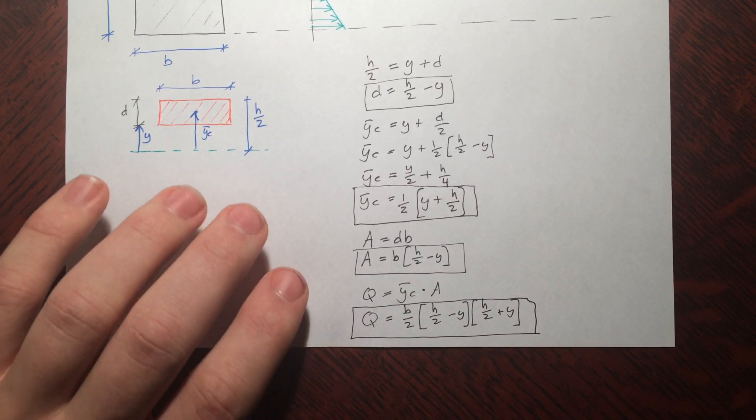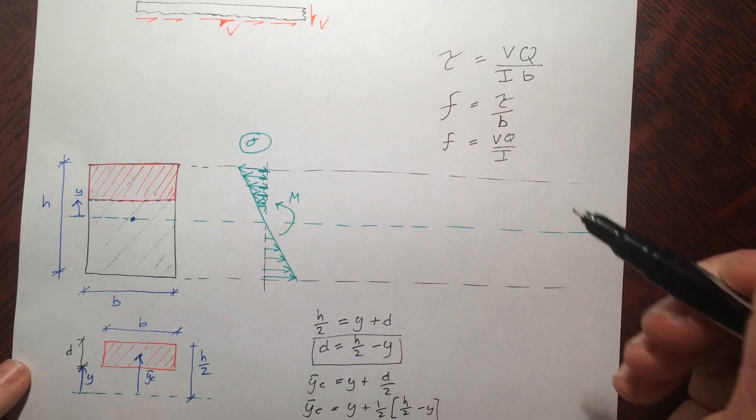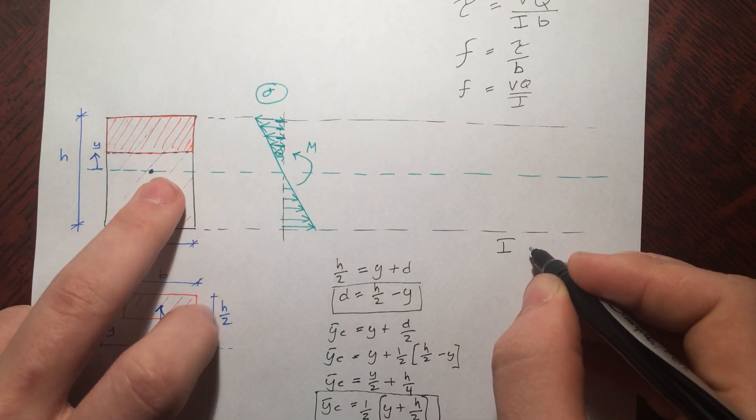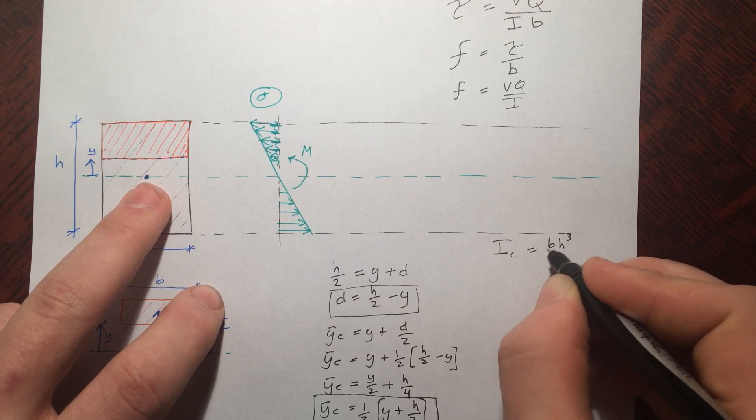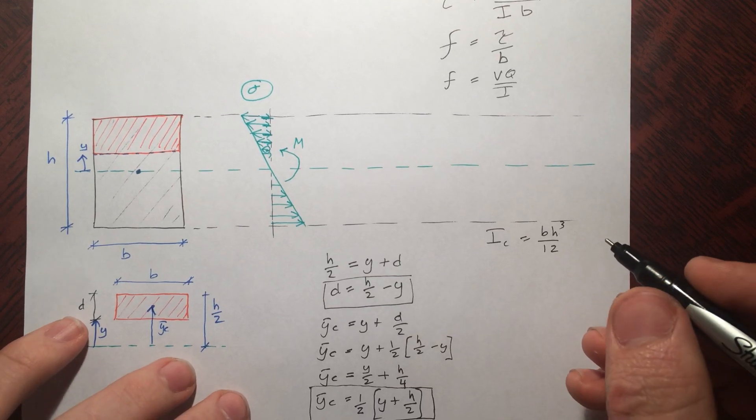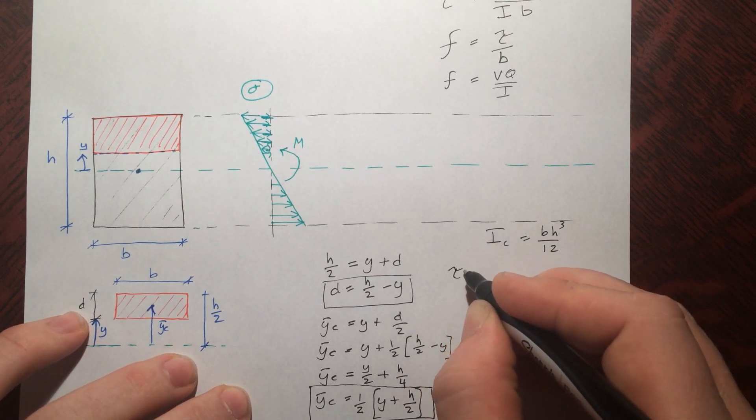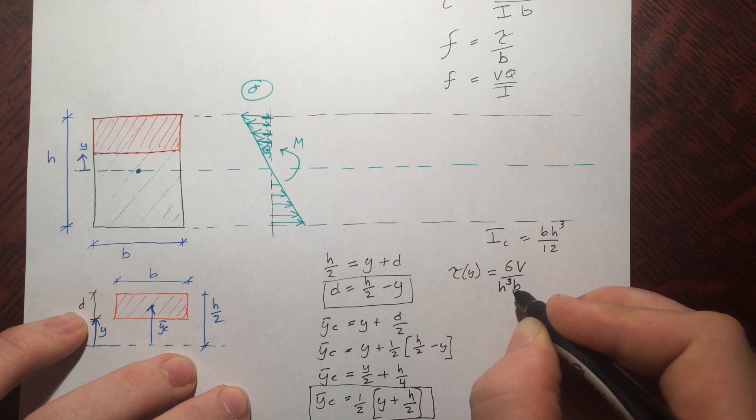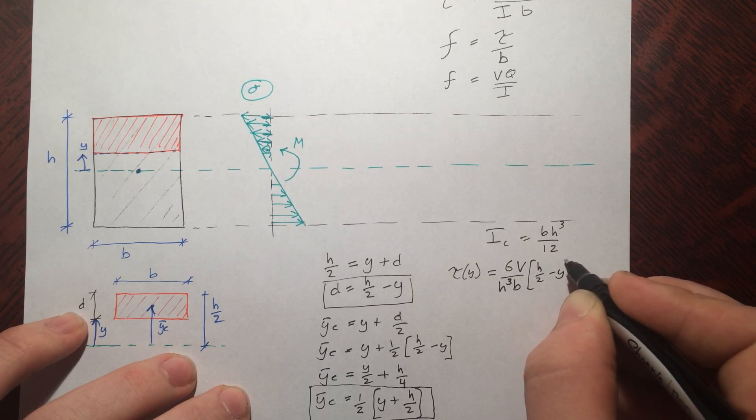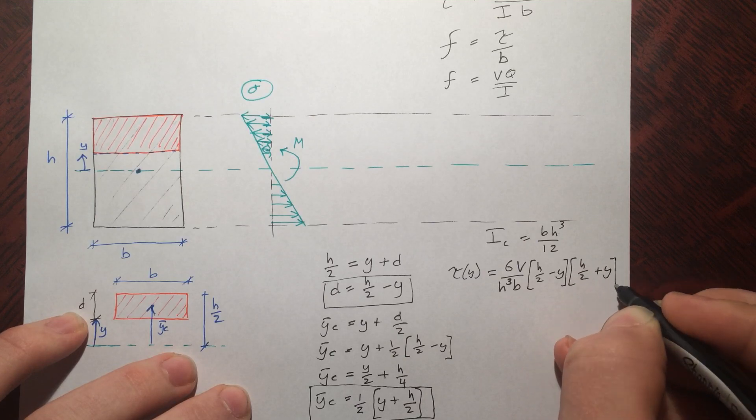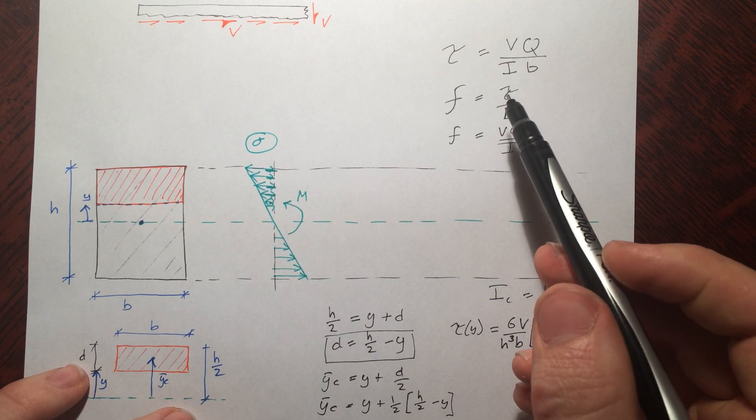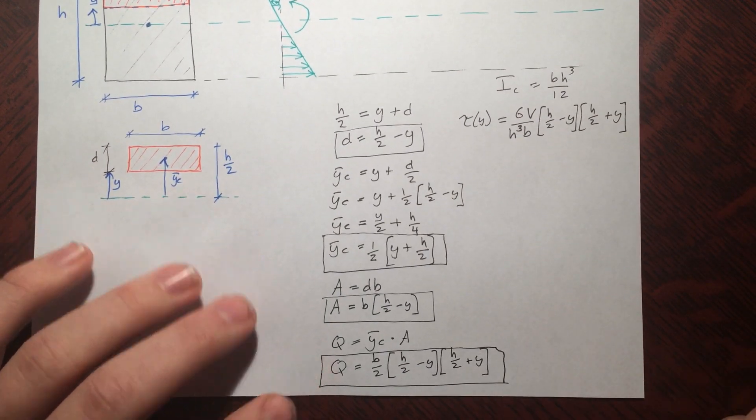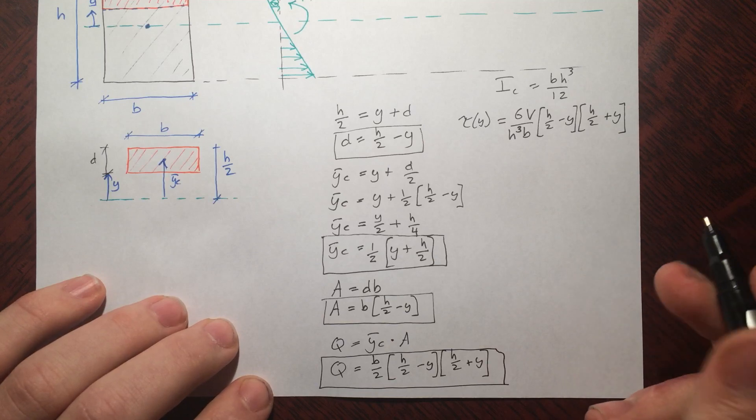So let's plug it back to our equation over here, tau, and let's solve i in terms of this thing here. So i for this piece, about its centroidal axis, is bh cubed by 12, and plugging everything together, we get... So basically just plug i into here, and took v to just be some value, and then b, of course just to be b, and then q, I plugged in what I had over here. So this gives us the distribution of the shear stress as a function of y.